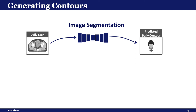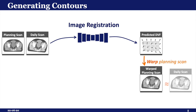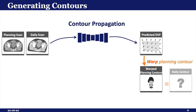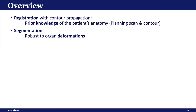Segmentation models take the daily scan as input and predict the corresponding contour by looking at tissue features. Registration models take both the manually delineated planning scan, which we call the moving image, as well as the daily scan, which we call the fixed image. The model predicts a mapping between the two in the form of a DVF that can be used to warp the planning scan to ideally equal the daily scan. The same mapping can then be used to warp the planning contour to obtain the unknown daily contour.